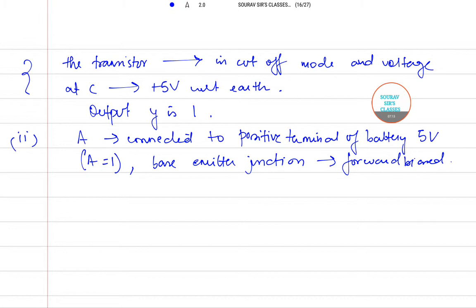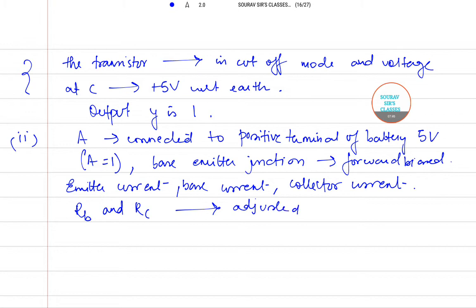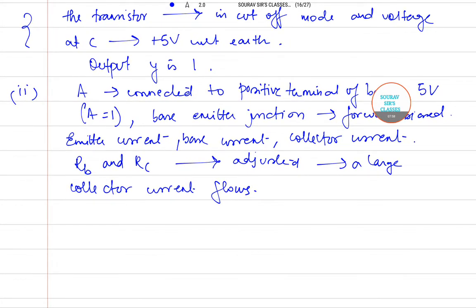There will be emitter current and collector current. The values of resistors RB and RC are so adjusted that in this particular arrangement a large collector current flows. In this situation, the transistor is said to have gone into saturation state.